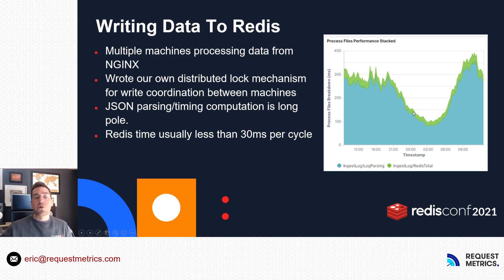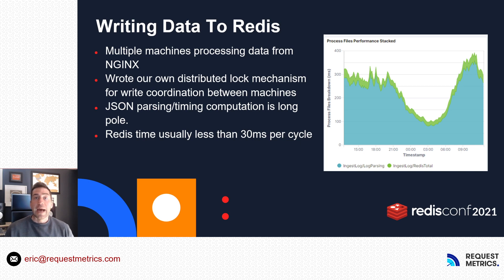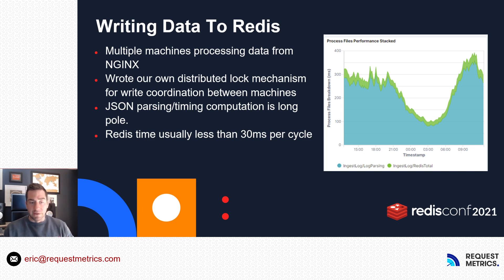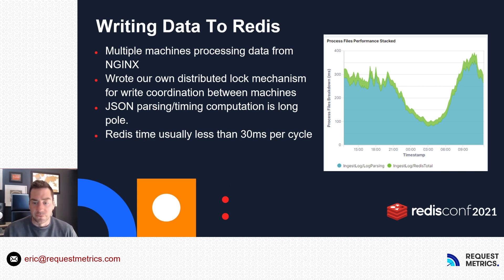It just goes to show you how fast Redis is. We have two machines — master and replica — both processing their own log files. In order to not tromp each other, we actually had to write our own distributed lock mechanism to make sure that when box A is writing, box B doesn't write and vice versa. The Redis write time is usually less than 30 milliseconds per cycle to process this sort of thing, which is pretty amazing.